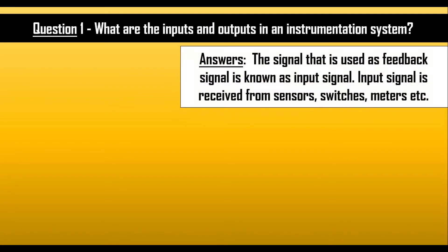The answer is: the signal that is used as a feedback signal is known as the input signal. Input signals are received from sensors, switches, meters, etc. In instrumentation, feedback signals or input signals are received from various sensors, switches, meters, etc.